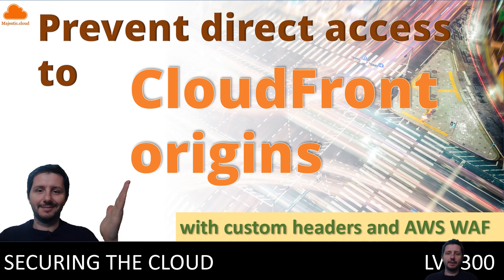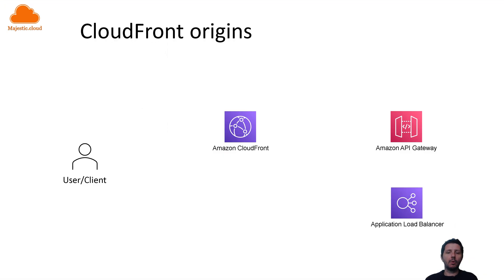Hello builders, my name is Laszlo and today I'm going to talk about preventing direct access to your CloudFront origins. We're going to do that with some custom headers and AWS WAF. Let's see in a bit more detail what our use case is. We have an application hosted on EC2 instances fronted by a load balancer, or an application written in Lambda functions with an API Gateway in front, and you could place a CloudFront distribution in front of them to leverage caching, DDoS protection, and other use cases.